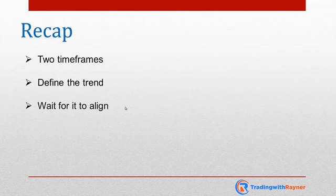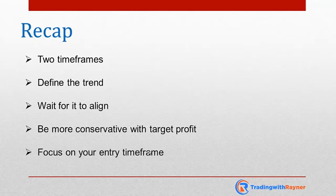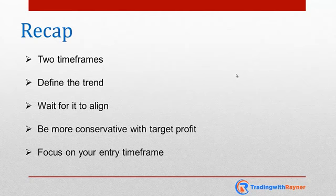Third: wait for both timeframes to align before taking a trade — but note you may get fewer setups, so trade more markets to compensate. Fourth: be more conservative with your profit target when trading against the higher timeframe trend — this is more suitable for swing traders looking to capture one swing. Fifth: just focus on your entry timeframe — this suits systematic trend followers whose entries and exits are all based on their entry timeframe. I hope these five tips help you better handle conflicting timeframes.